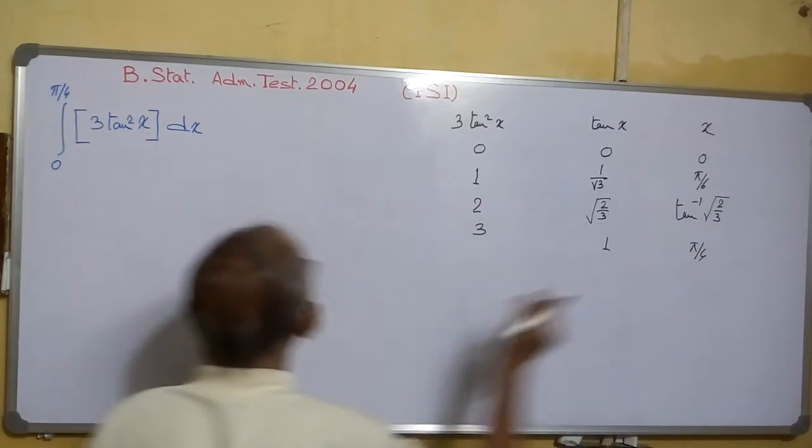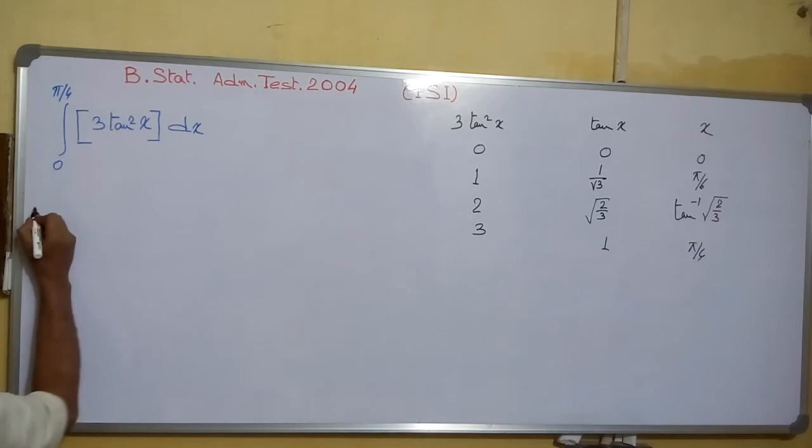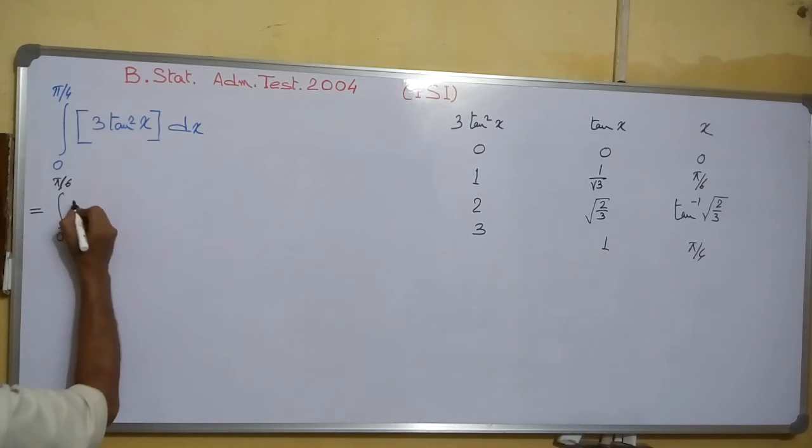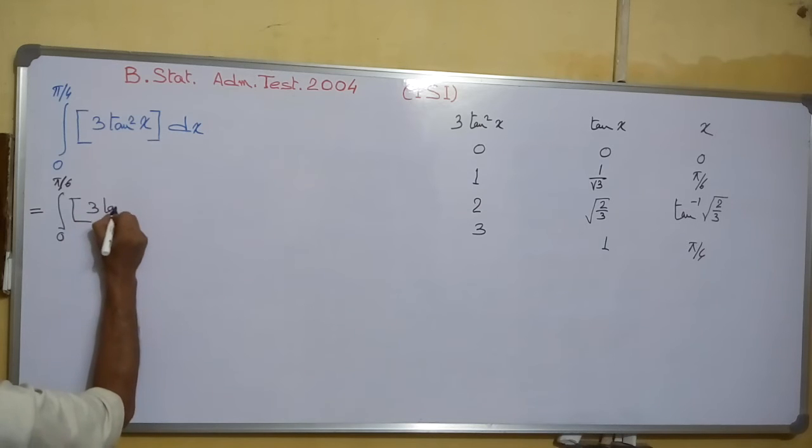So this one we can write equals to 0 to π/6, 3tan²x dx.